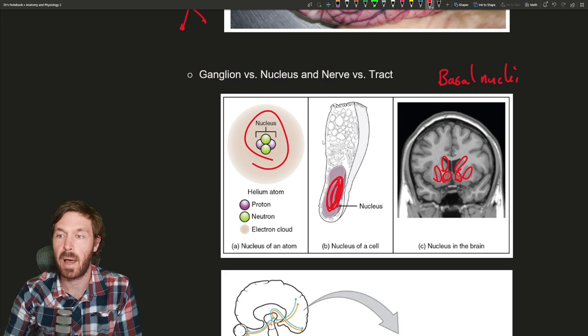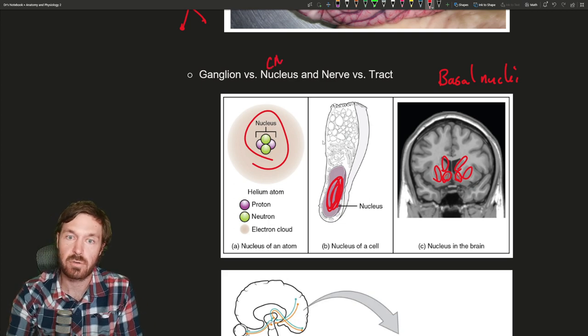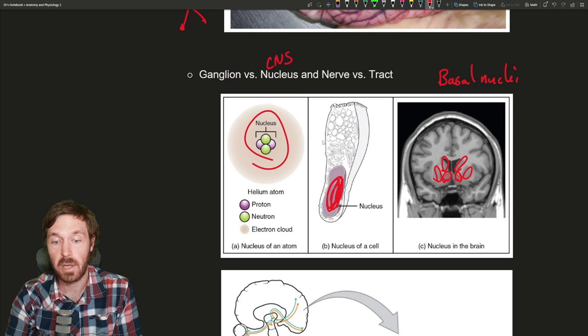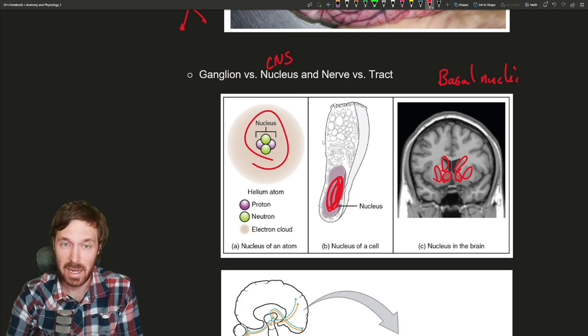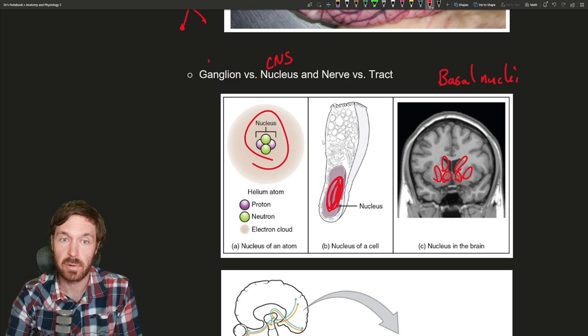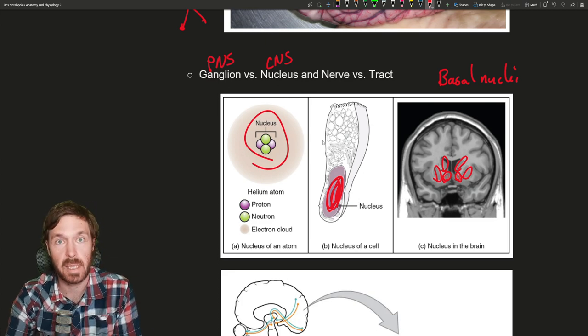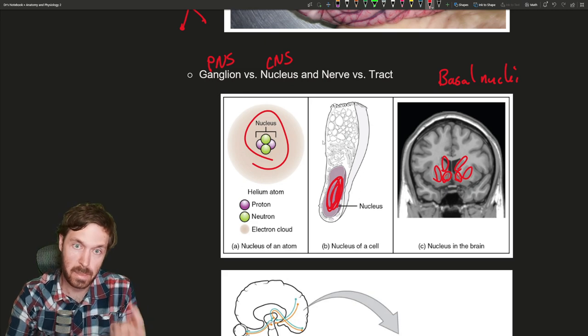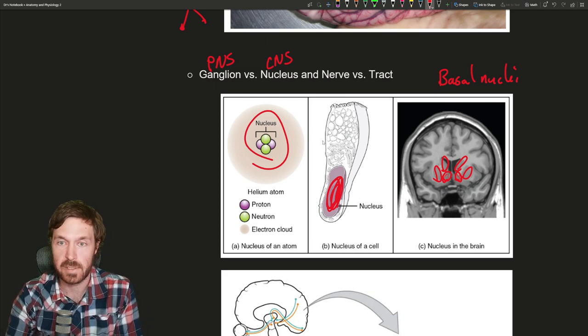A cluster of cell bodies can also be found outside the central nervous system in the peripheral nervous system, and those are known as ganglions. There's the dorsal root ganglion and autonomic ganglions that are found in the peripheral nervous system.